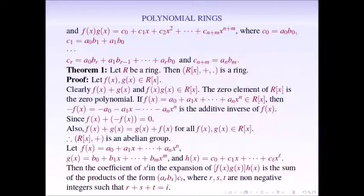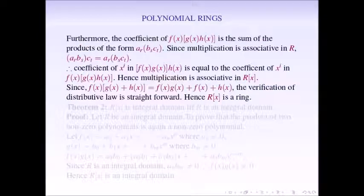It remains to prove that multiplication is associative and multiplication is distributive over addition. To prove associativity, consider three polynomials f(x), g(x), and h(x) in R[x]. Since R is a ring, multiplication is associative in R, meaning the coefficients satisfy the associative property. Therefore, the coefficient of x^i in f(x)·(g(x)·h(x)) is the same as in (f(x)·g(x))·h(x). Hence, multiplication is associative in R[x], and similarly distributivity holds. Therefore, R[x] is a ring under addition and multiplication.